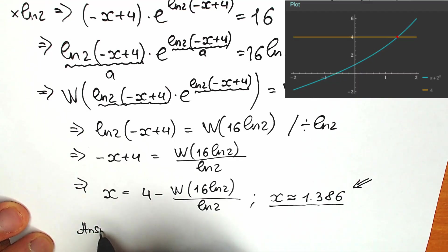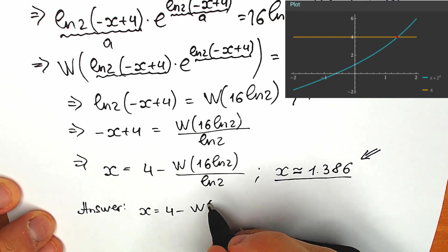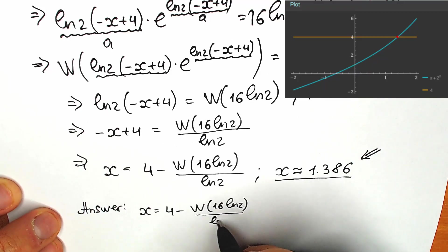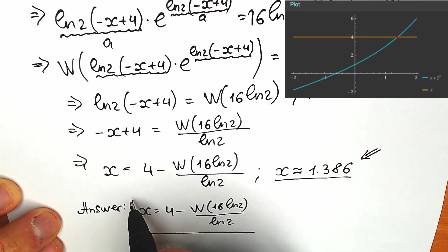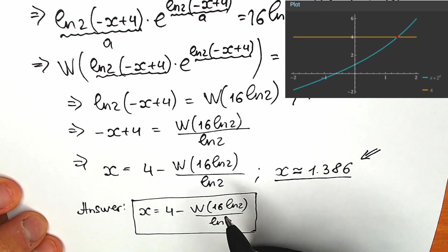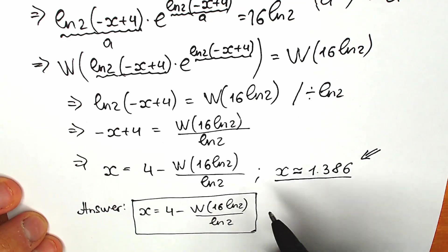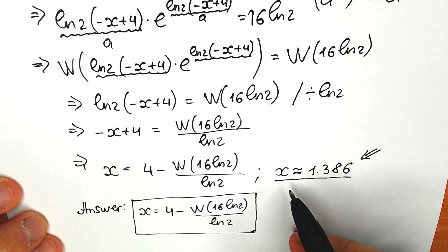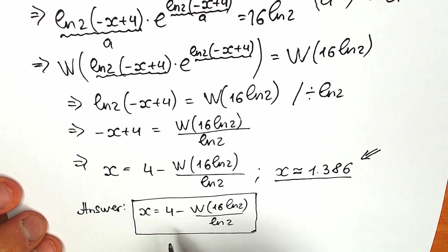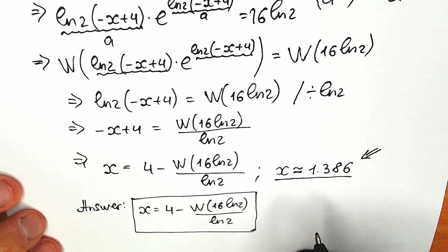Let's write our final answer. I really hope you understand it and learned something new — a great question involving the Lambert W function. So the answer is x equals 4 minus W(16 natural log 2) divided by natural log 2. This is also approximately 3.86 — though you may not be allowed to use a calculator on your exam, so the exact form is the final answer. Thank you for your time. Write your answer in the comment section and let us know what you think. See you in the next videos. Have a great day, take care of yourself.